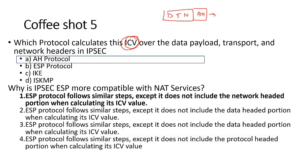AH doesn't work with NAT because when data goes through the router, the router needs to modify the network header portion, which impacts the overall AH. This question is about authentication and authenticity — the Integrity Check Value is added in the AH. Therefore, the answer is AH protocol. ESP is used to encapsulate data with the transport and network headers kept external. ISAKMP is the overall key management framework. The answer is AH.